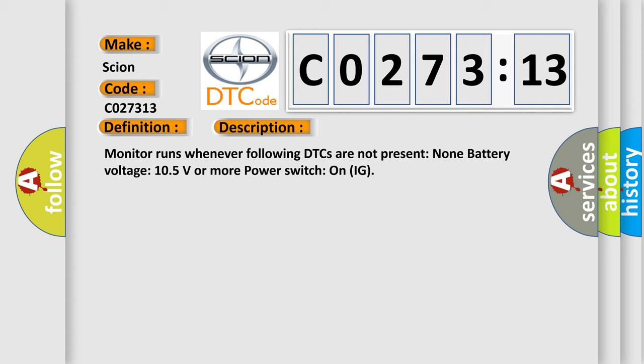Monitor runs whenever following DTCs are not present: None. Battery voltage 10.5 volts or more power. Switch on IG.